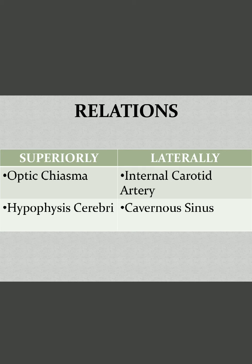Hypophysis cerebri is the pituitary gland — a very important endocrine gland. Laterally, the sphenoid sinus is related to the internal carotid artery and the cavernous sinus. The cavernous sinuses are dural venous sinuses that receive blood from the cerebral veins and CSF, and finally empty into the internal jugular vein. They are situated between the endosteum and the meningeal layers of the dura mater, which is why they are called dural venous sinuses.